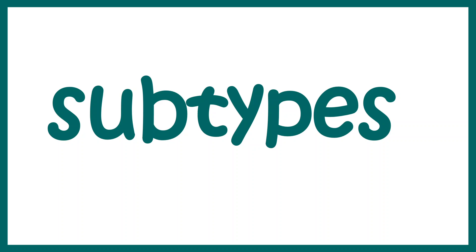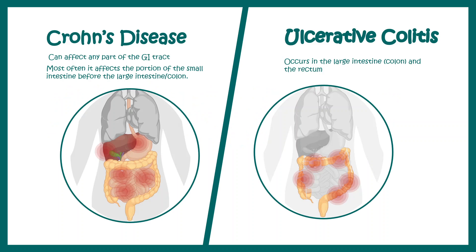There are two subtypes of inflammatory bowel disease. One is known as Crohn's disease and another one is known as ulcerative colitis. The major difference is that in Crohn's disease the affected part could be any part of the GI tract, whereas in ulcerative colitis the inflammation occurs selectively in the large intestine, that means the colon.